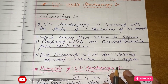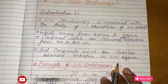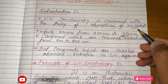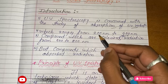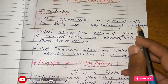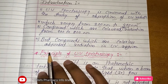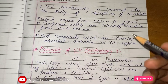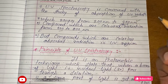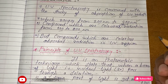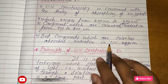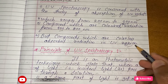Today we are going to see UV-Visible spectroscopy. UV spectroscopy is concerned with the study of absorption of UV radiation, which ranges from 200 nanometers to 400 nanometers. Compounds which are colored absorb radiation from 400 to 800 nanometers. The UV range is colorless to eyes, while the visible range is characterized by color. Colorless compounds absorb radiation in the UV range.